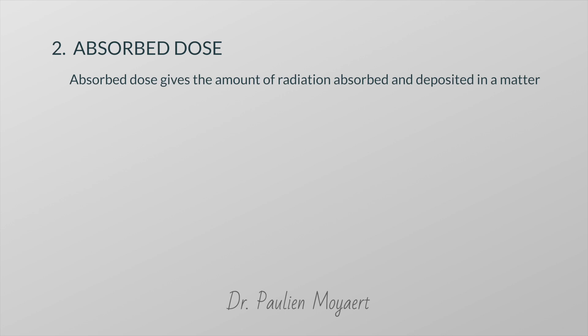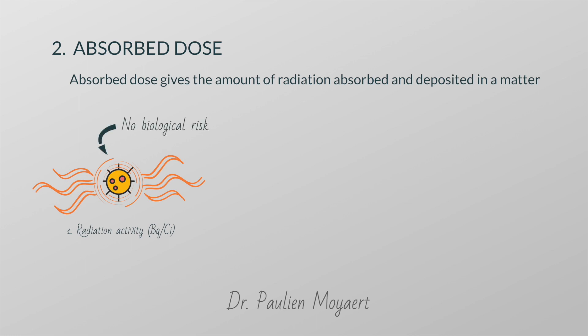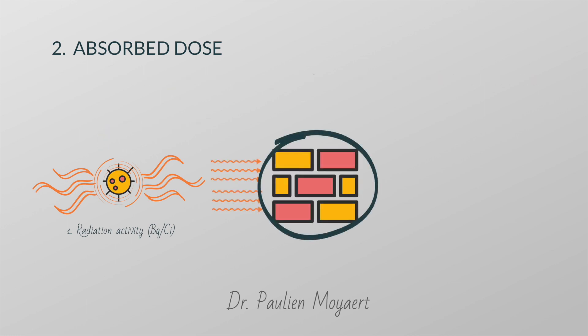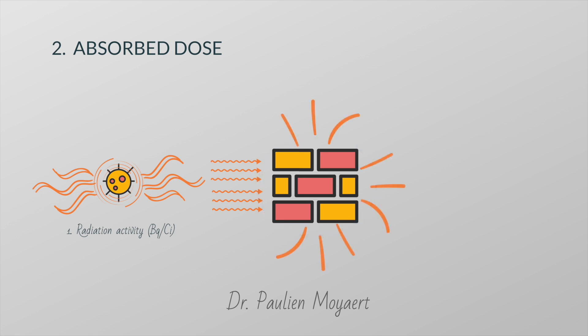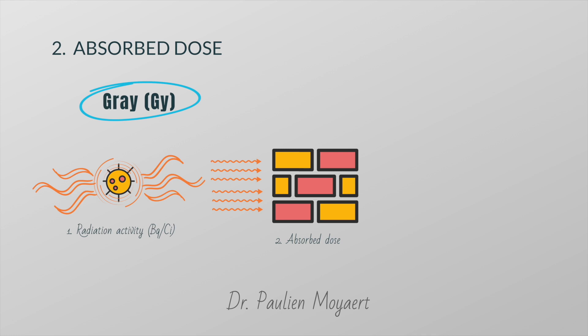But why do we deal with the absorbed dose? We have just discussed radioactivity and the intensity of a radioactive source. But a radioactive source represents no biological risk as long as it is isolated from the environment. However, when people or another system are exposed to radiation, energy is deposited in the material and radiation dose is delivered. It is therefore very important to distinguish between the radioactivity of a source and the radiation dose which may result from the source. The international unit of absorbed dose is the Gray, defined as the absorption of one unit of radiation energy per kilogram of matter.